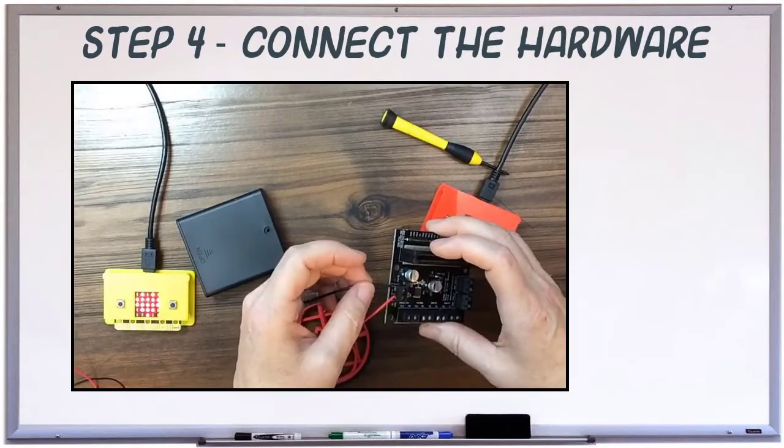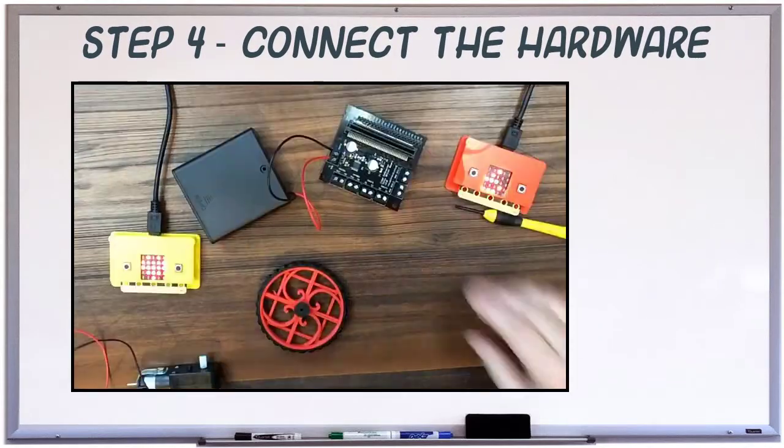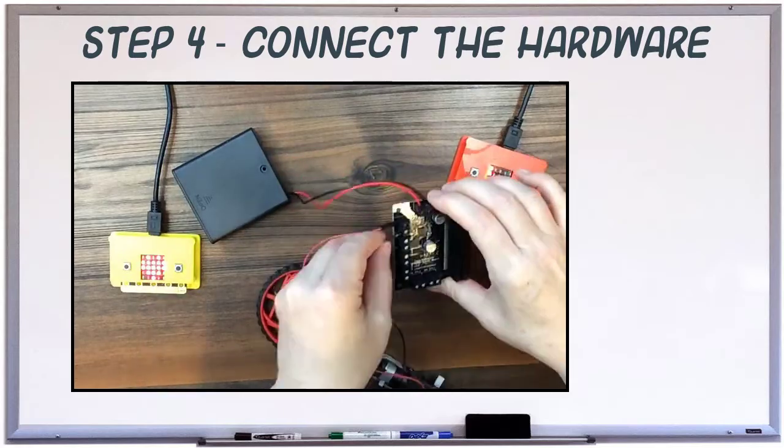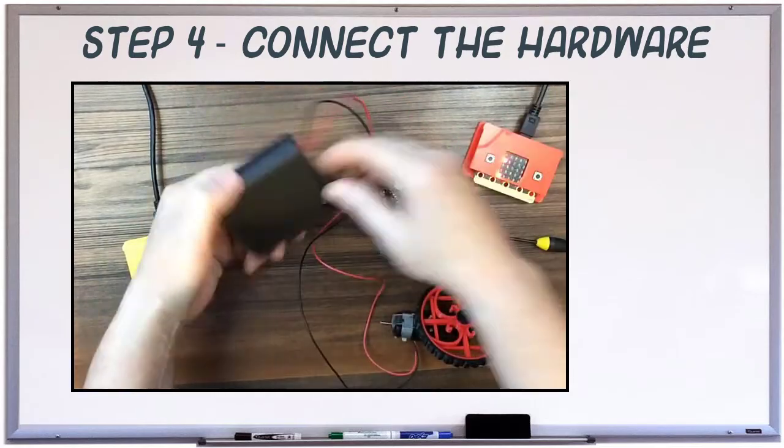Plug the power from the batteries into the motor board's power terminals. Plug the motor wires into the motor 1 terminals. Plug the robot microbit into the motor board.